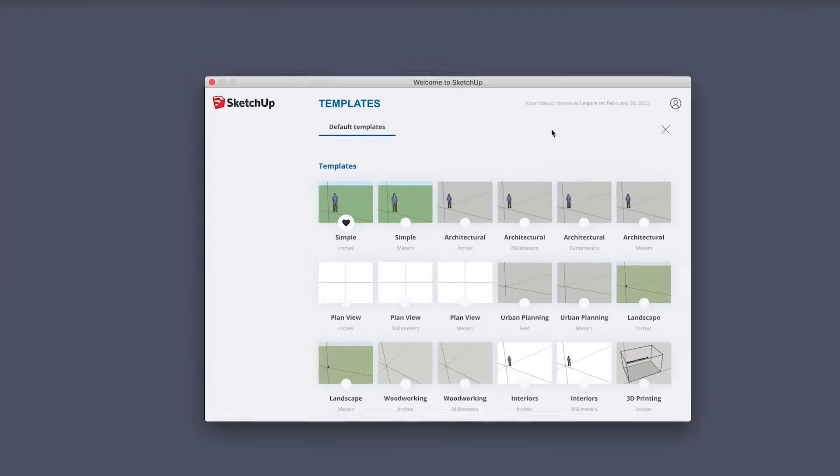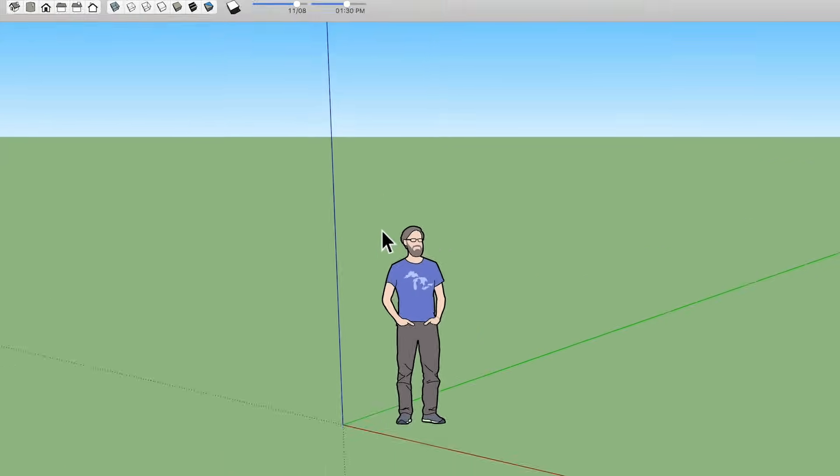When you first open SketchUp, you're likely to choose a template that starts you off in an isometric or 3D view. In fact, most tutorials you'll find online start you off in this very same template. But here's the problem. Starting in 3D is like forcing you to jump into the deep end before you know how to swim. You'll be more likely to get frustrated and quit. And even if you stick with it, you'll just end up with a bunch of bad habits that slow you down over the long run.